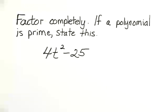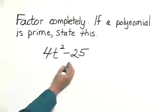Factor completely. If a polynomial is prime, state this. We're factoring the polynomial 4t squared minus 25.